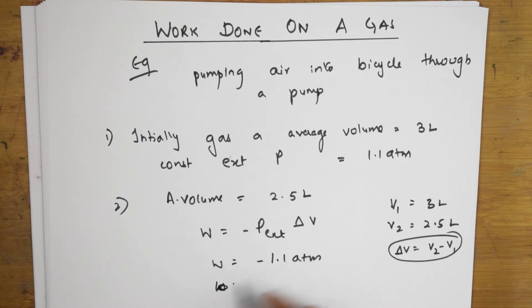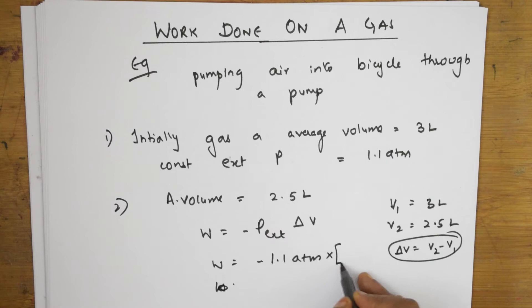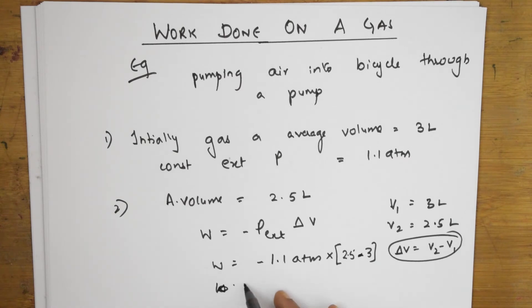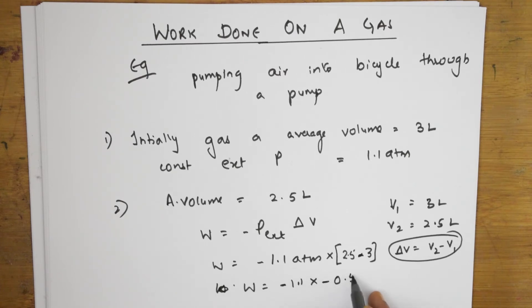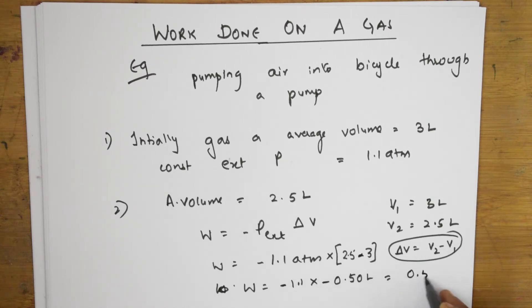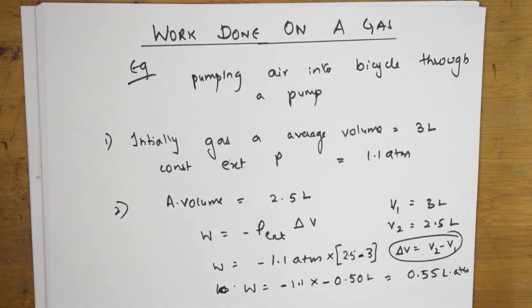So, apply this here. W is equal to 2.5 V2 minus V1 minus 3. Now, how much do I get W is equal to minus 1.1 into minus 0.5 liters. If I multiply, how much do I get? I get plus 0.55 liter atmosphere.